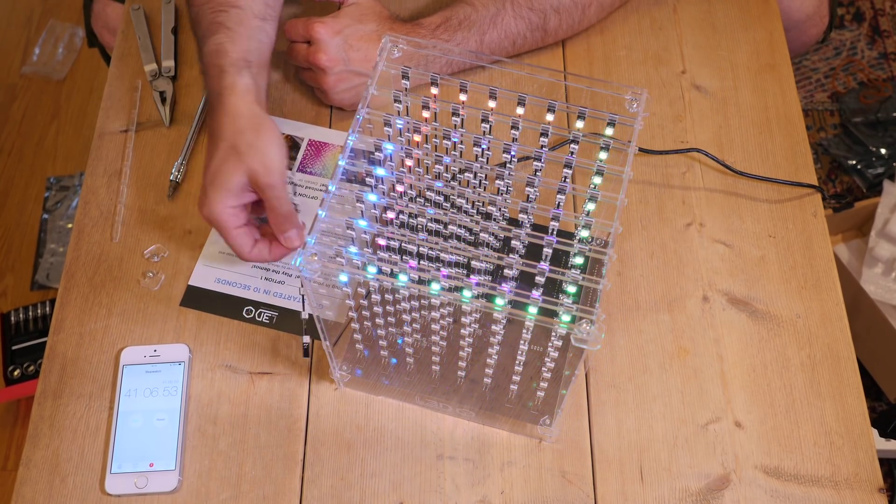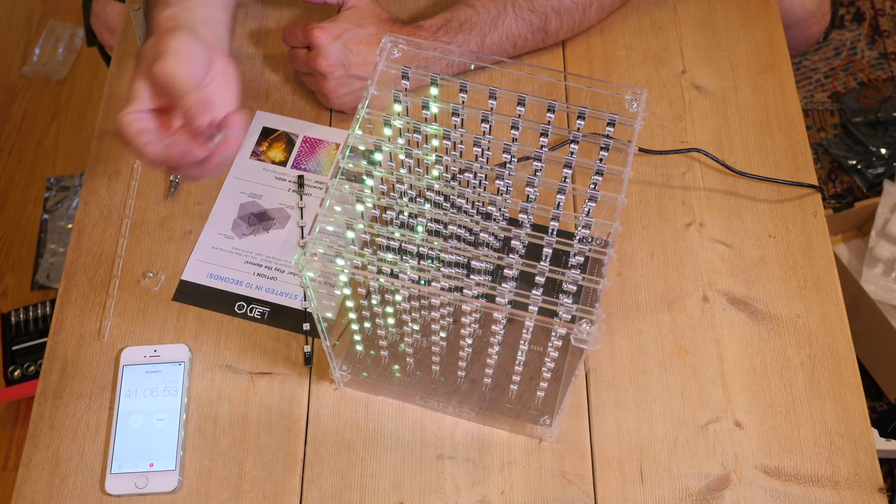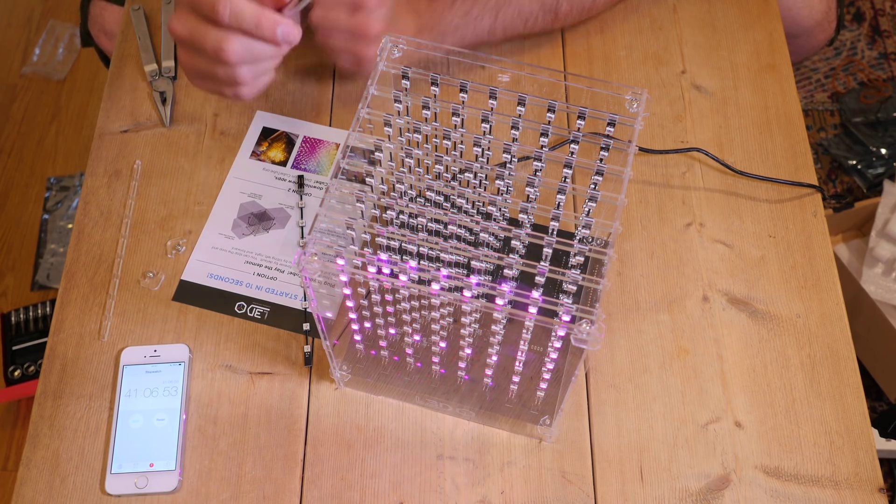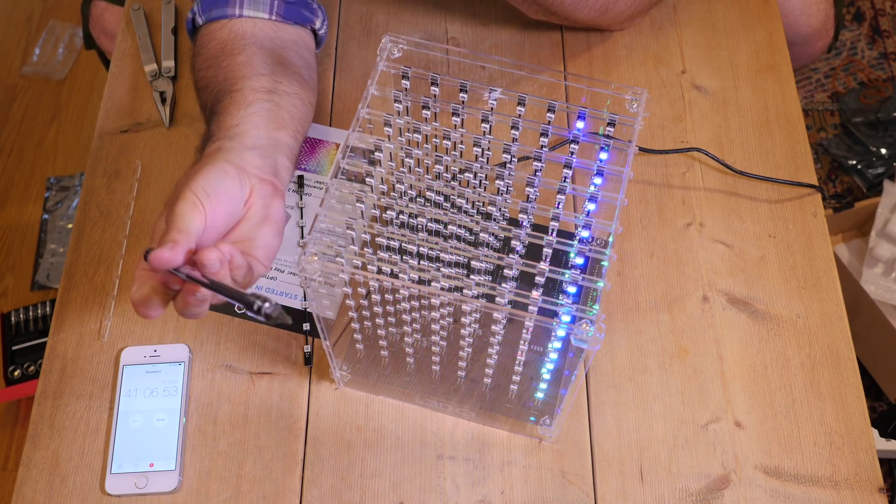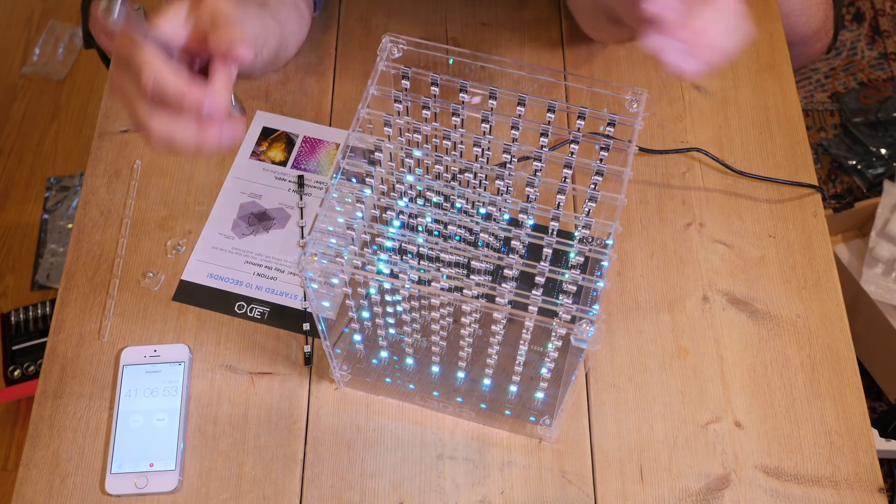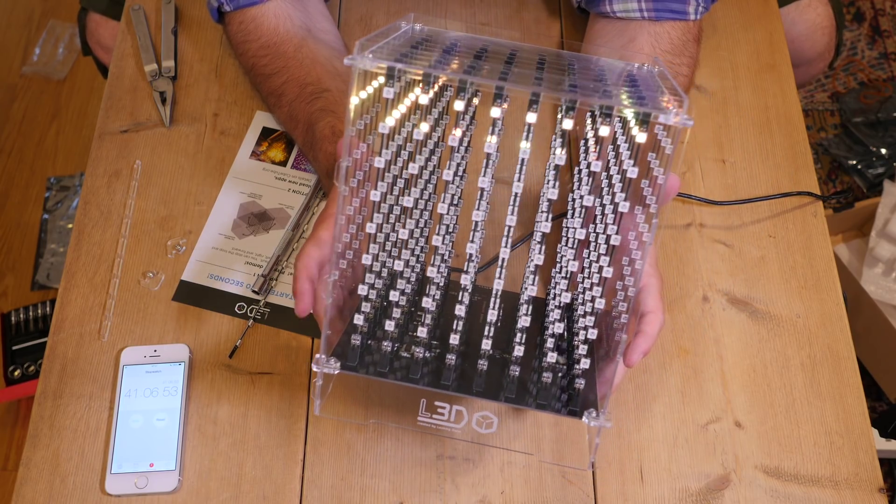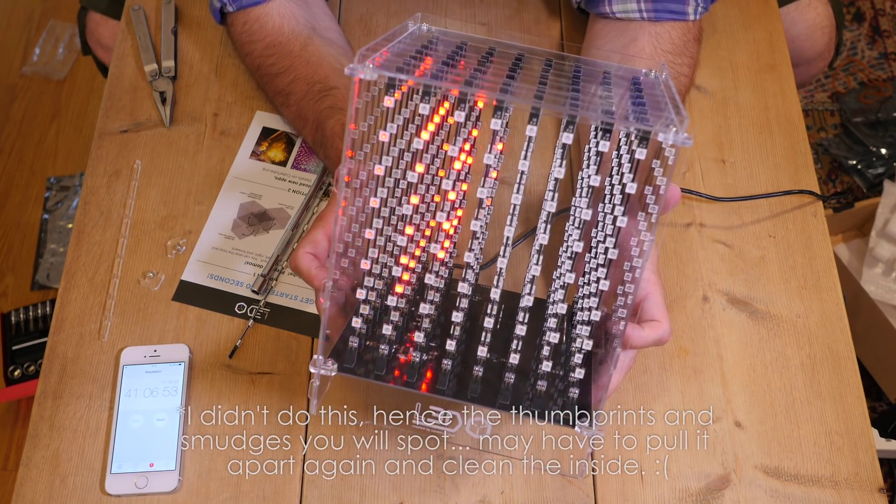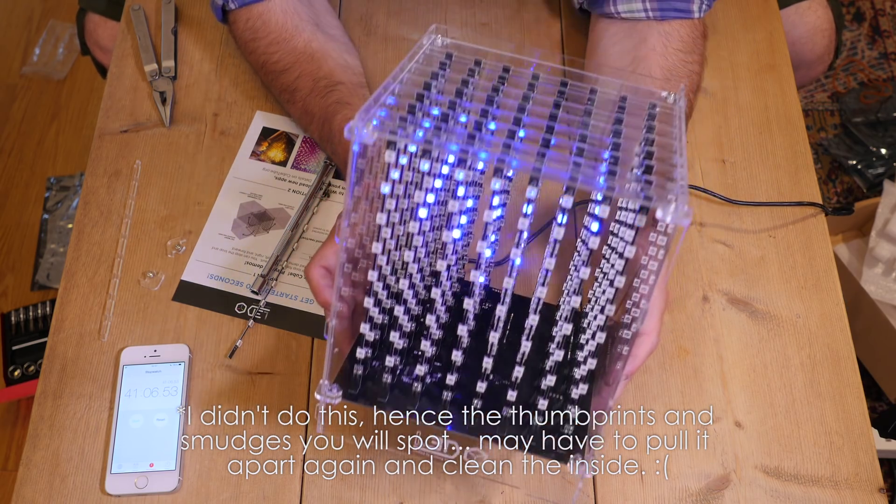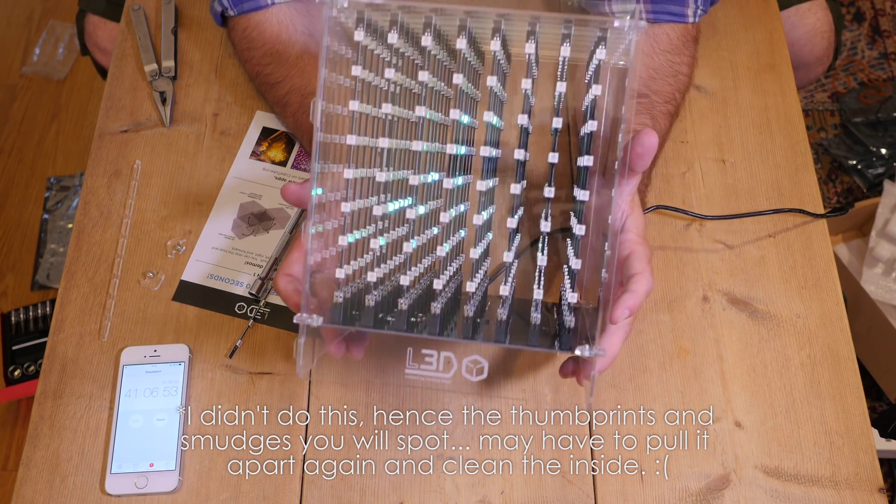I can't see any duff LEDs or anything. They give you a spare strip of LEDs, a spare perspex top strip, and a couple of spare corner pieces. A couple of notes on assembly: make sure you've got a screwdriver with a reasonably thin handle because you need to get down into quite small spaces.